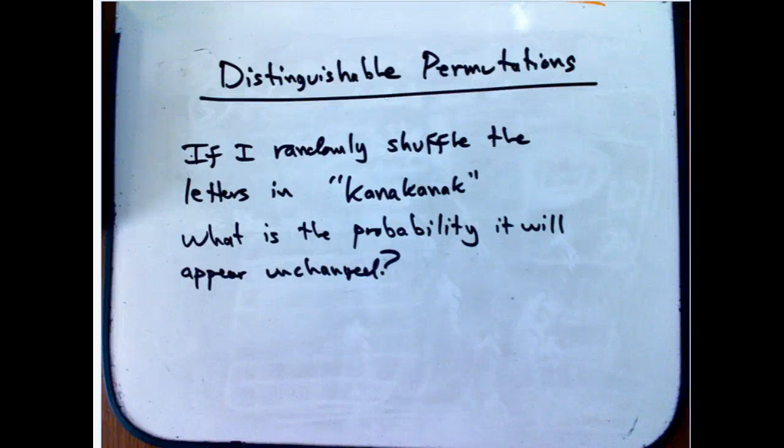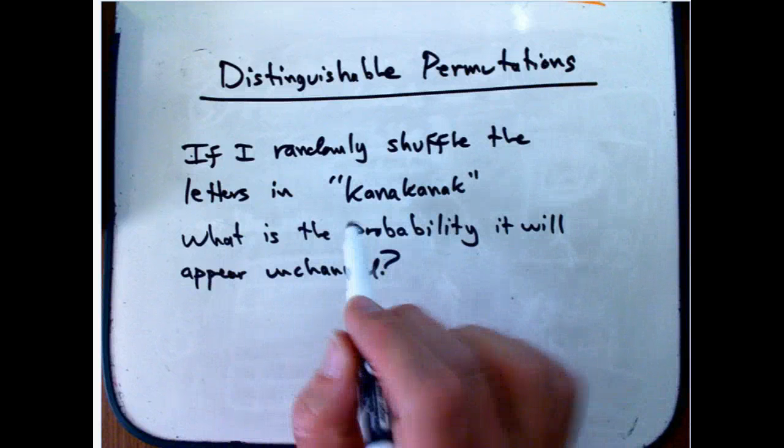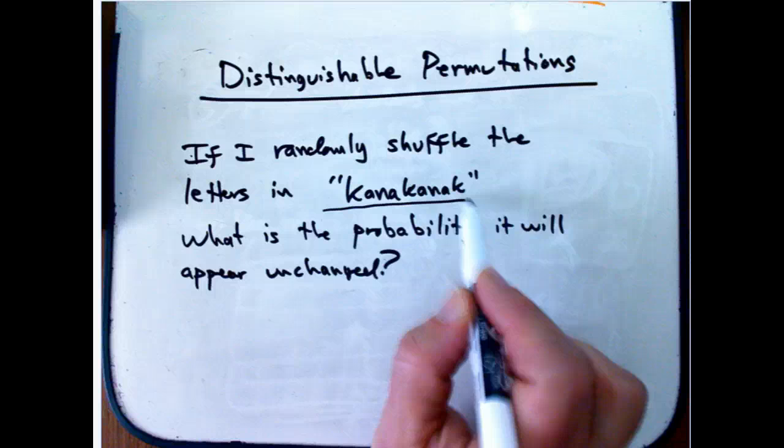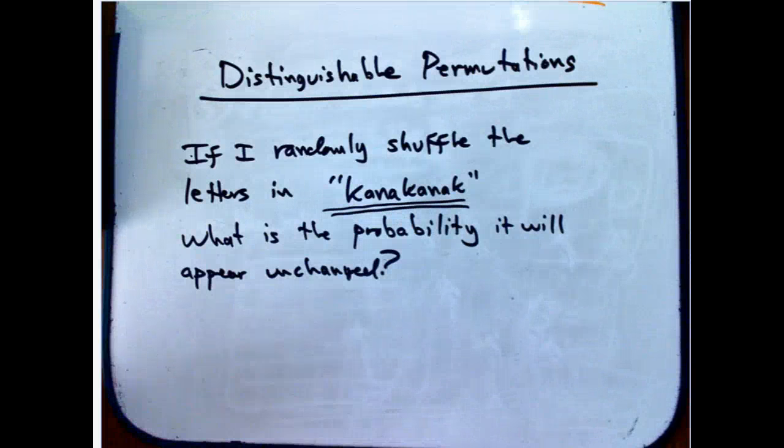Here's a quick problem on distinguishable permutations. I can phrase it as a probability problem. If I randomly shuffle the letters in Kanakanak, which is a settlement in Alaska, apparently, what is the probability that it will appear unchanged?